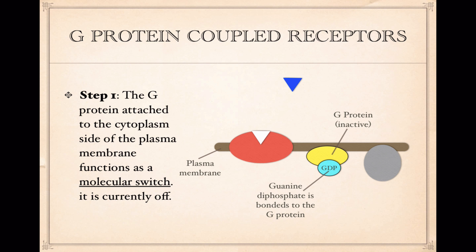G-protein coupled receptors are based in the plasma membrane. This brown colored strip here represents the plasma membrane. This side down here is the cytoplasm side, and up here is the environment side or the extracellular matrix side. Floating in the extracellular matrix are signal ligands or signal molecules, and notice that the signal molecules have the right shape to fit into a receptor protein's active site — a lock and key arrangement.